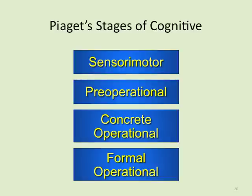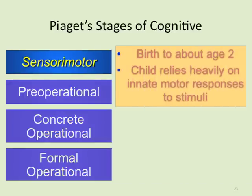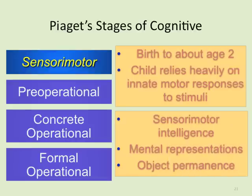The sensorimotor stage runs from birth to about age two. A child relies heavily on innate motor responses to stimuli — basic responses like turning toward a sound or a voice. Sensorimotor intelligence develops as the baby starts hearing sounds, processing faces and voices, developing recognition and mental representations. Object permanence is a key concept here: babies believe that if they can't see something, it no longer exists — which is why peek-a-boo is so popular.